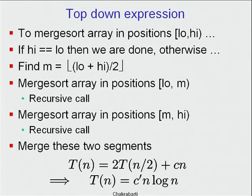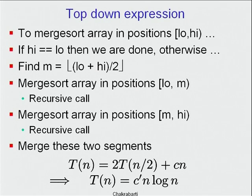It is a little more natural to express merge sort in a top-down fashion. To merge sort an array in positions low through high — where low is included and high is excluded — if high equals low, the array is empty, so you are already done. There is nothing to sort. Otherwise, find the midpoint m equal to the average of low and high, taking the integer part.